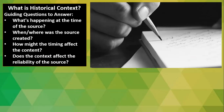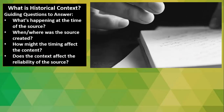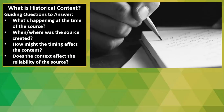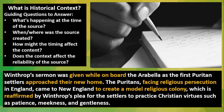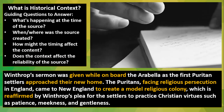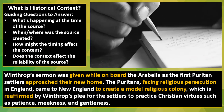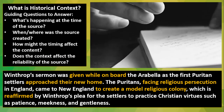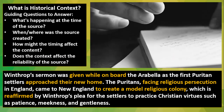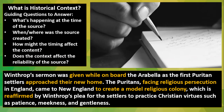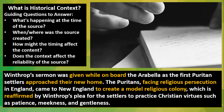So what would historical context look like? You get several questions you could answer, but by far more students answer the first bullet point — what's happening at the time of the source — as they give background information leading up to the document. Here's an example: 'Winthrop's sermon was given while on board the Arabella as the first Puritan settlers approached their new home. The Puritans were facing religious persecution in England.' Right there — you see how I'm qualifying this, setting the context, highlighted in yellow. 'They came to New England to create a model religious colony, which is reaffirmed by Winthrop's plea for settlers to practice Christian virtues such as patience, meekness, and gentleness.' That's how to be specific.